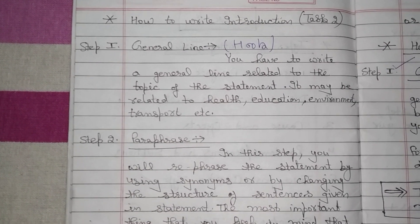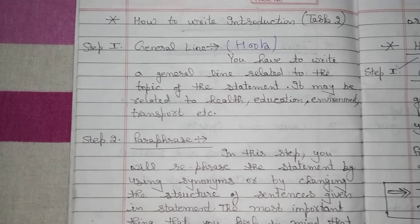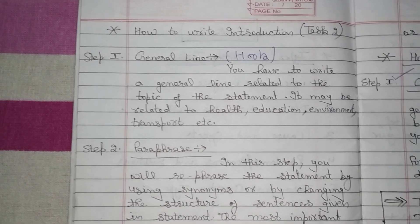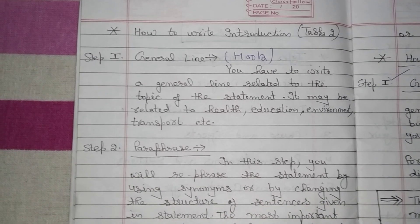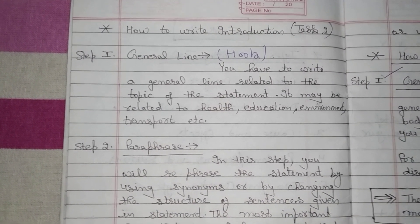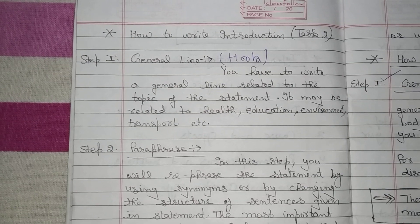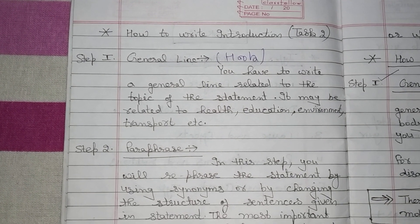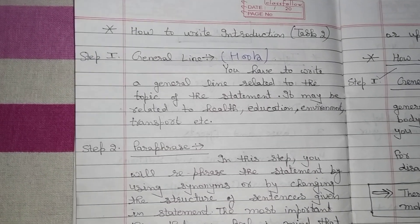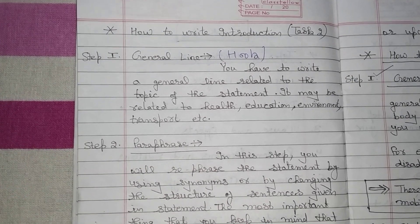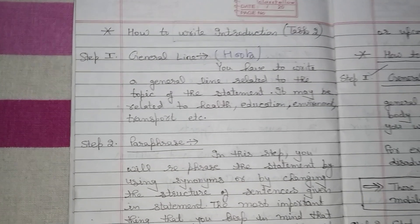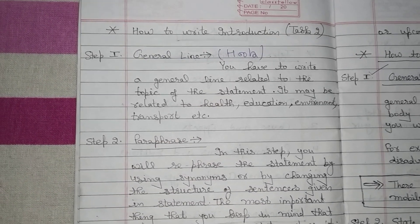You can use the general line or you can skip it — if you use it, it will not increase your band score; if you don't use it, it will not decrease your band score. Some trainers require you to write a general line such as 'education plays an important role' or 'health plays an important role,' but that is not compulsory, because whether your introduction is boring or interesting doesn't matter for your band score.